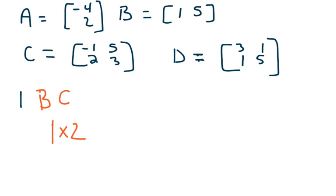C, we have a two by two. Is it defined? Yeah. Our inside numbers match up. What are the dimensions of our new matrix after we multiply? It's going to be a one by two.